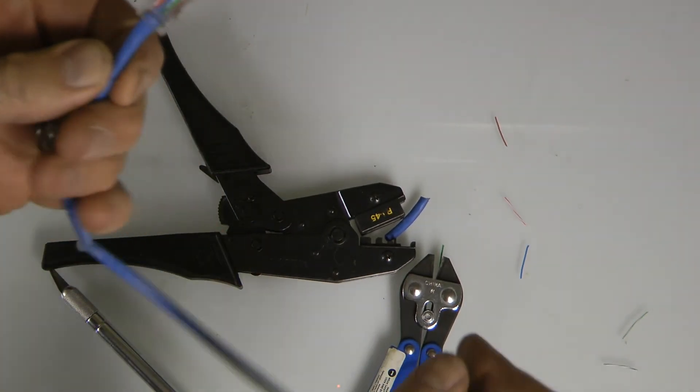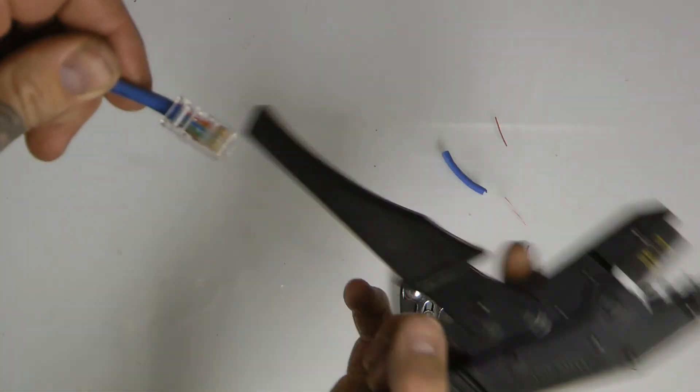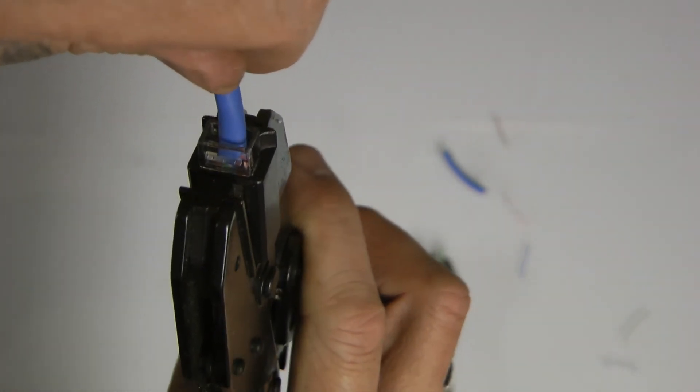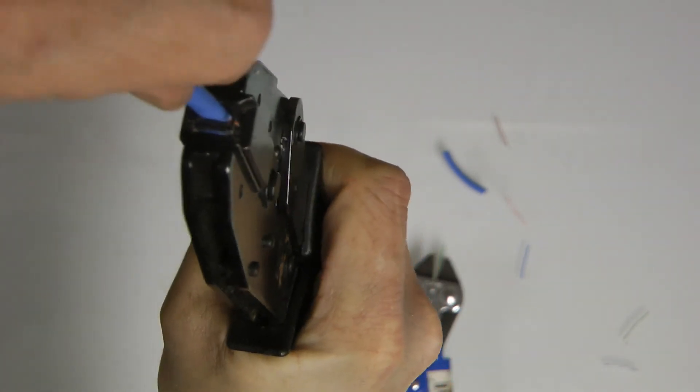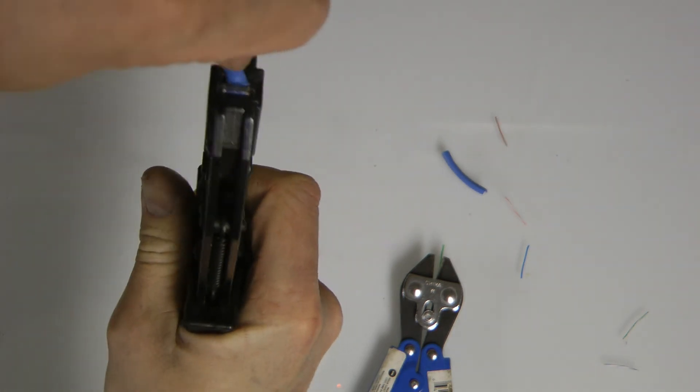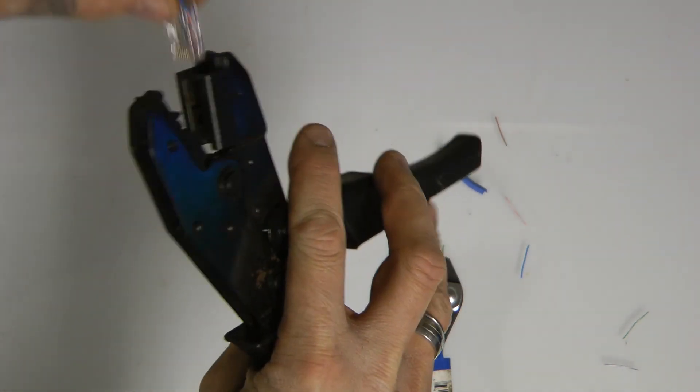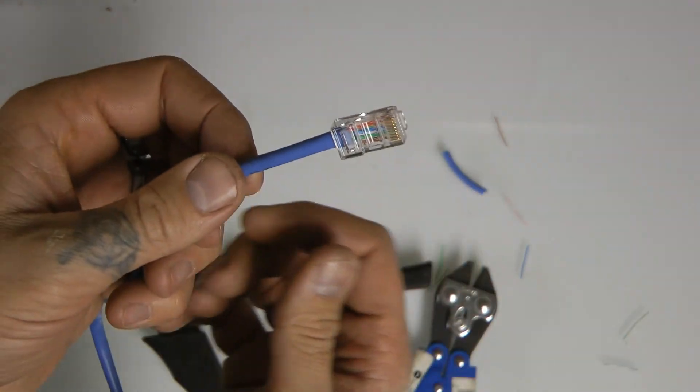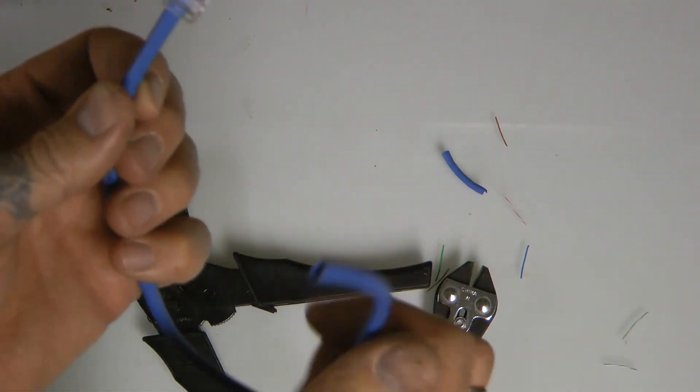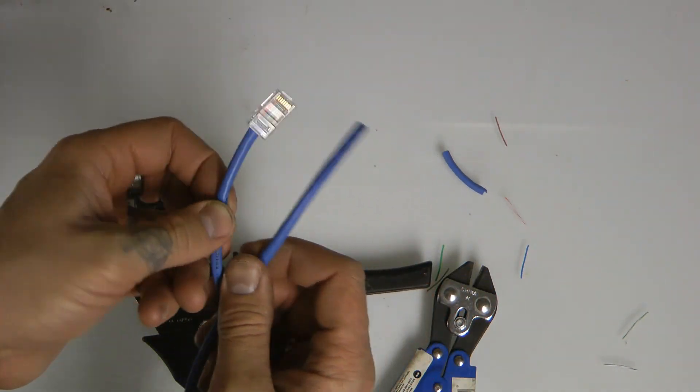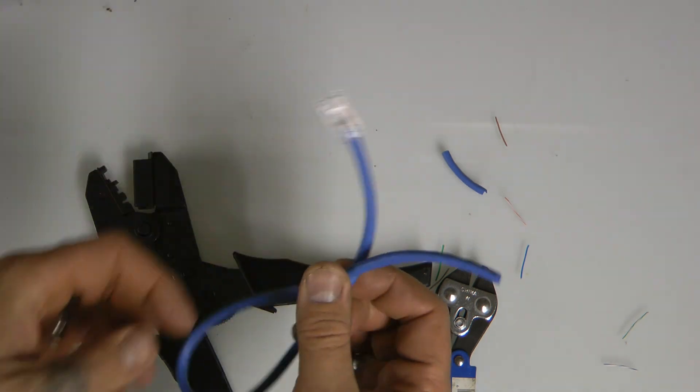Once you have that, you carefully take your crimpers, insert it into your crimpers, and squeeze. And I squeeze about twice. I always do this a couple times. There we go. That's how you terminate a network cable. You do the same wiring on the same other side, and there you go. You now have a one-foot cable. That doesn't do me very much good, but there we go.